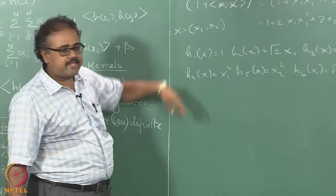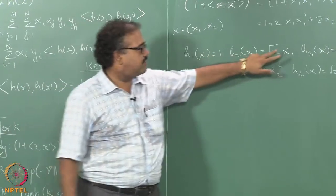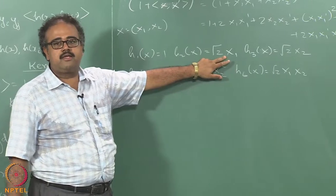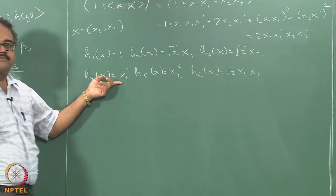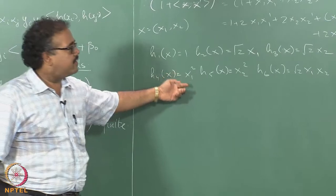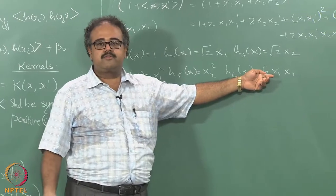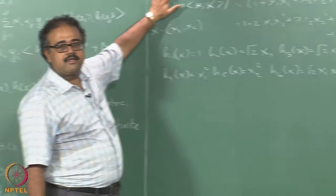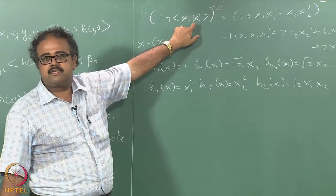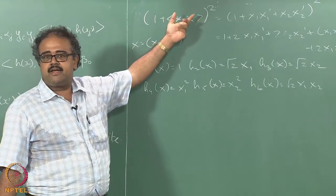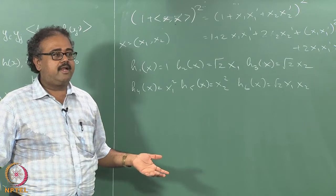Now if I make this operate on X and X prime and take the inner product, the terms are: 1, 2*x1*x1_prime, 2*x2*x2_prime, x1_squared * x2_prime_squared, and 2*x1*x1_prime*x2*x2_prime — which is exactly what we have from the polynomial kernel formula. So the nice thing is I can essentially compute the inner product of X and X prime first, add 1, and square it. Numerically I will end up with the same result as if I had done the basis expansion and then taken the inner product.